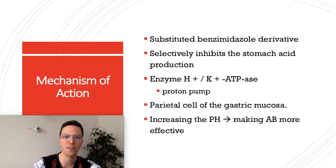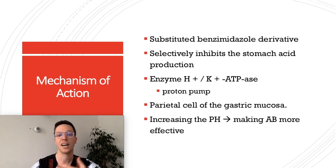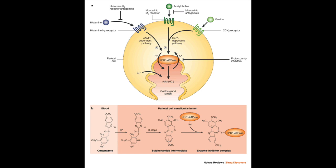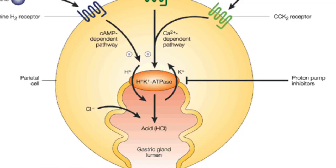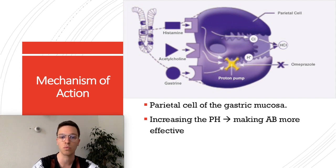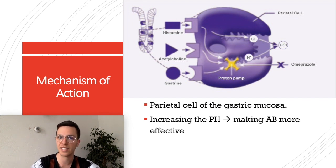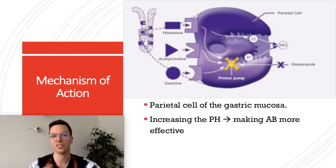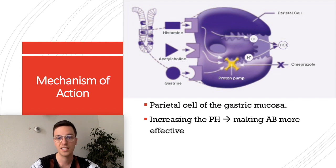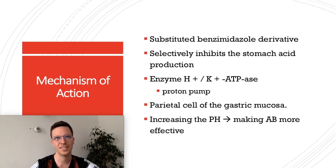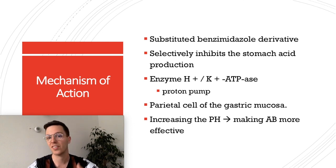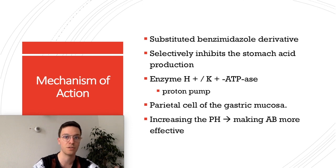Omeprazole belongs to the medical group called proton pump inhibitors — they inhibit the proton pump. It is a substituted benzimidazole derivative that selectively inhibits stomach acid production by inhibiting the enzyme hydrogen-potassium ATPase, also called the proton pump. Normally, this enzyme works within the parietal cell of the gastric mucosa and pumps hydrogen into the stomach, lowering the pH. By taking Omeprazole, you inhibit this enzyme and prevent hydrogen from being pumped into your stomach, causing the pH to rise and protecting your stomach. The higher pH also makes antibiotics more effective.